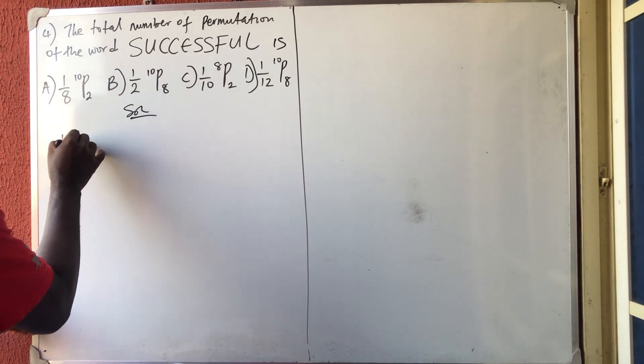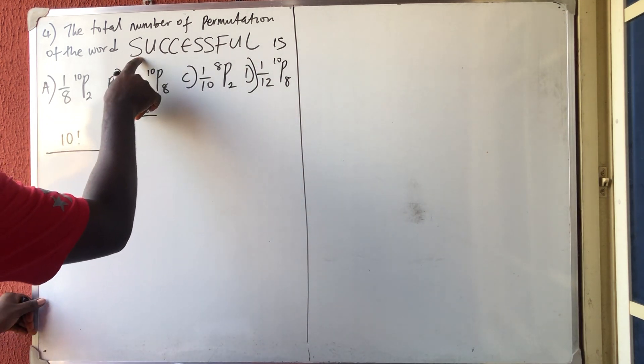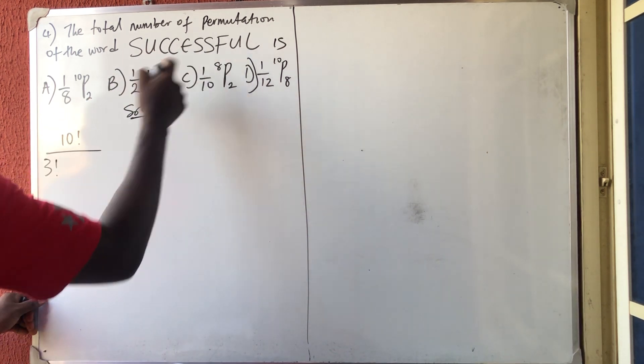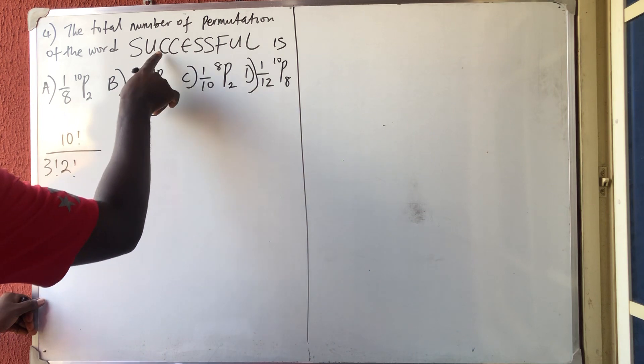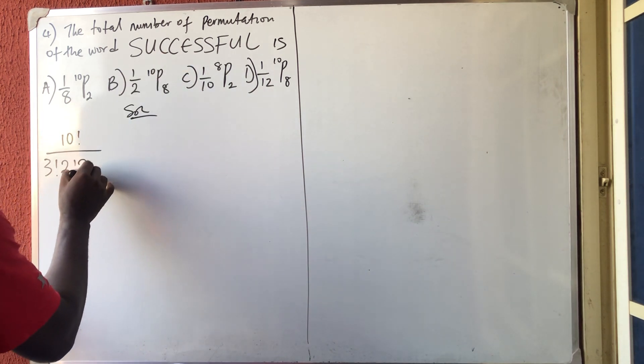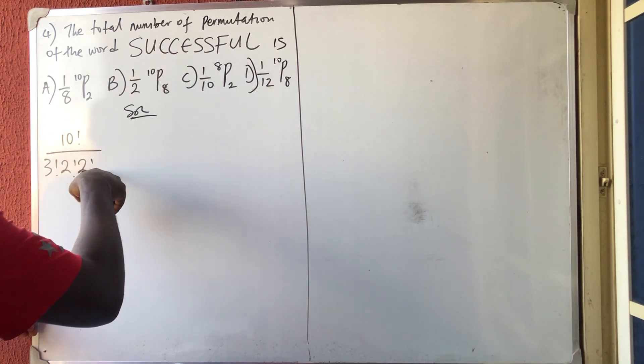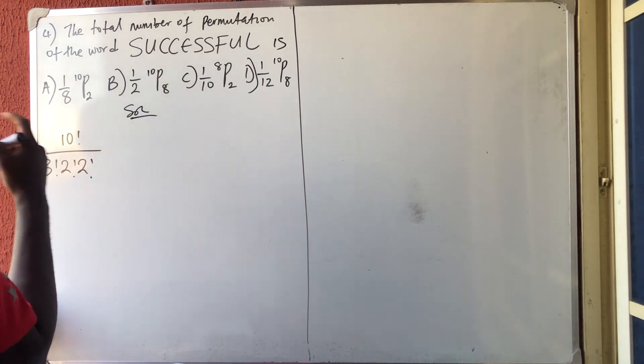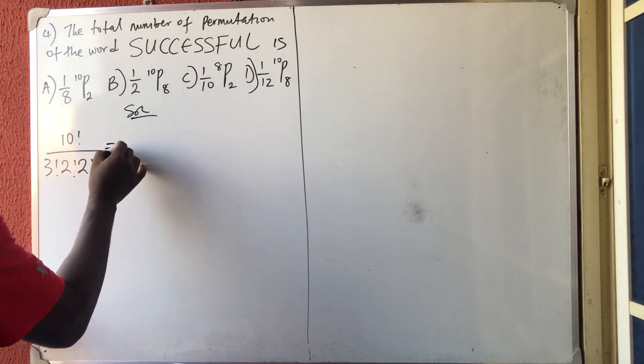Nine, ten. So I'm going to have 10 factorial all over: S is how many? One, two, three, they are three factorial. U is how many? One, two, two factorial. C is how many? One, two, two factorial. E is how many? One. One factorial is one so I will not write it. F is one, the same thing. L is one. So this is what I'm going to have.